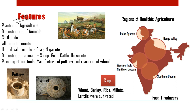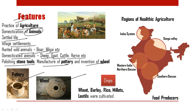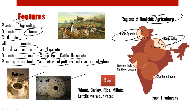The features of the Neolithic age include the practice of agriculture and domestication of animals, which led to settled life and village settlements. They hunted wild animals like boar and nilgai, and domesticated animals such as sheep, goat, cattle and horses. Other features include polishing of stone tools, manufacture of pottery, and cultivation of wheat. The regions of Neolithic agriculture were divided into four parts: the Indus system, Ganga Valley, Western India (Northern Deccan) and Southern Deccan. Crops such as wheat, barley, rice, millets and lentils were cultivated. In one word, they were mostly food producers.